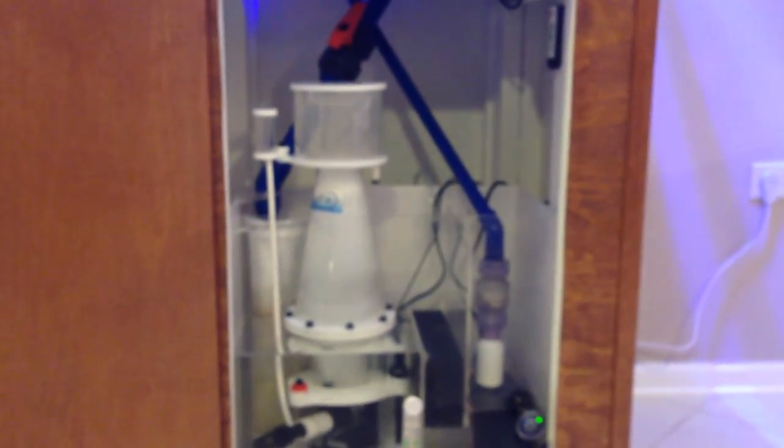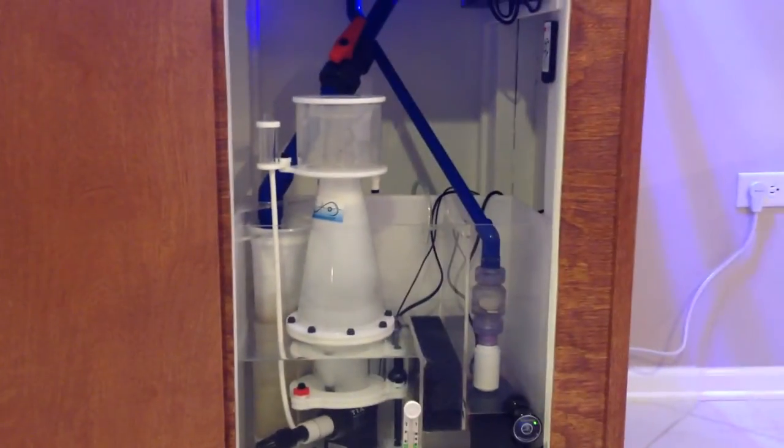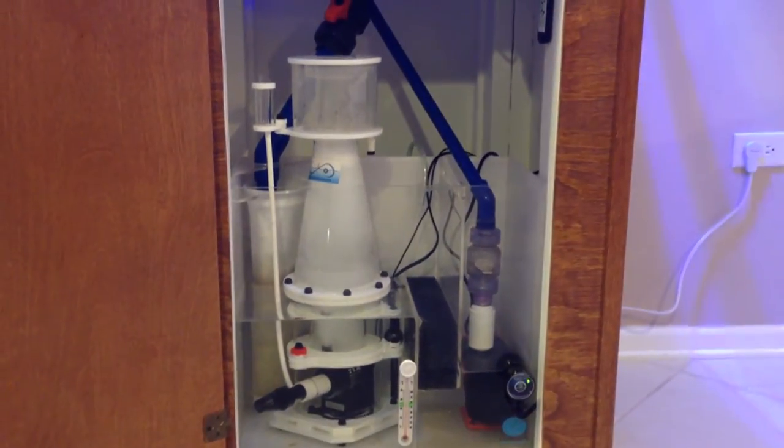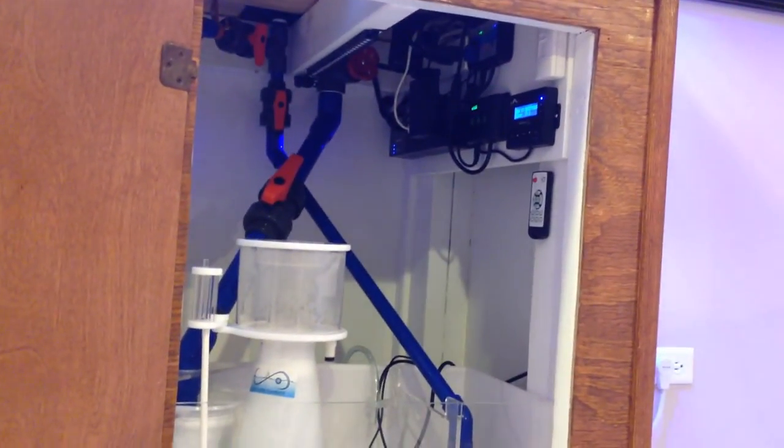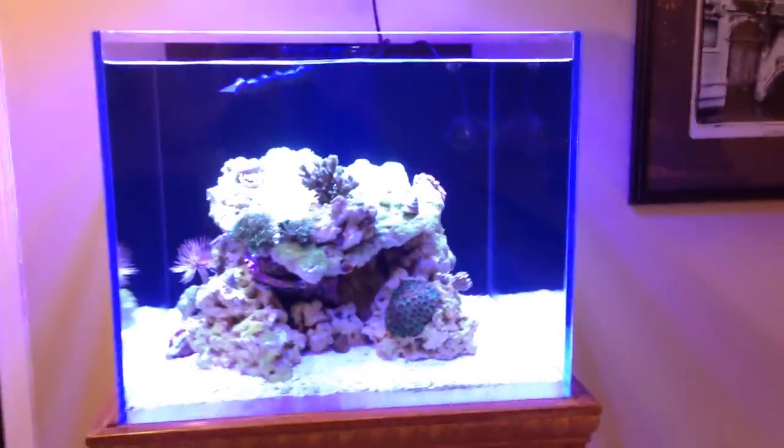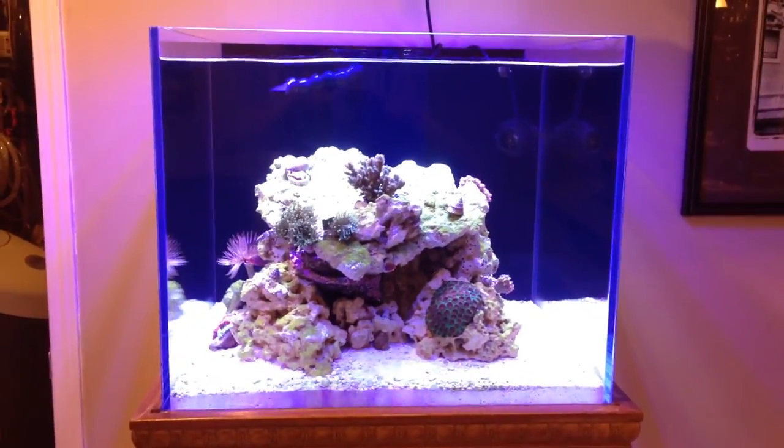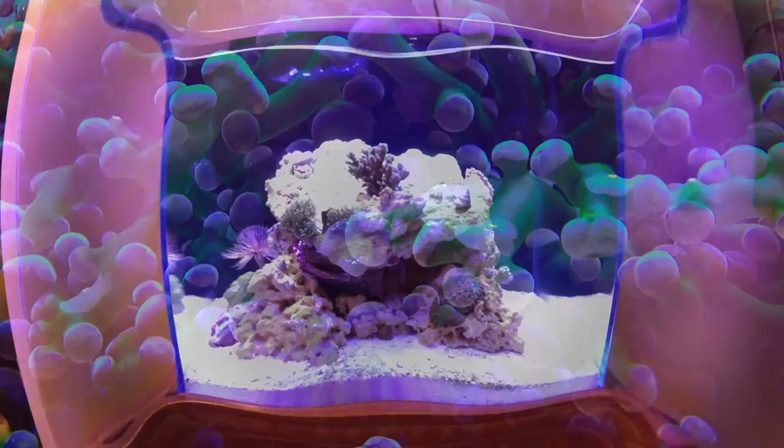Yeah, so that's pretty much all the pieces of equipment. You can see the LED controller there on the right hand side as well. So I think it looks pretty clean. No problems, no leaks when I plumbed it. I used blue PVC, which was kind of hard to get a hold of. But that's about it. I really hope you enjoyed this. And I'll see you next time.